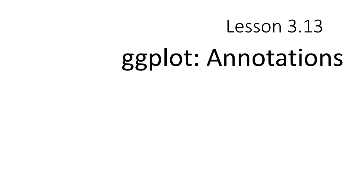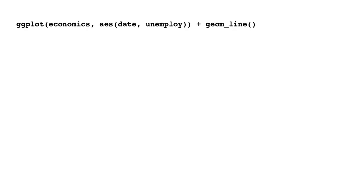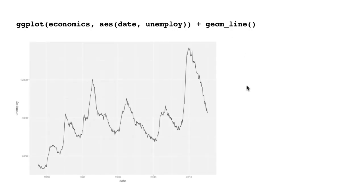We looked at geom_text and geom_label. Now let's take a larger case study of where we might apply these kinds of annotations. Here we are going to use the same economics data frame, plotting on the x-axis date and y-axis the number of people unemployed using geom_line. We get this unemployment level, and what we want to do is plot some additional information on top to try to communicate something. Most of the time when we present data, we try to present some hypothesis or bring out some relationship that might exist in the data.